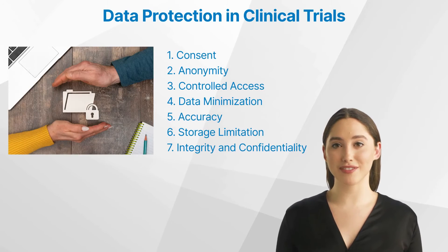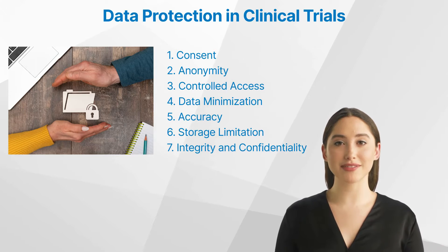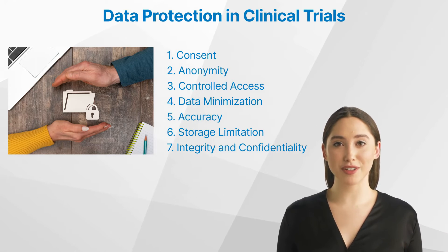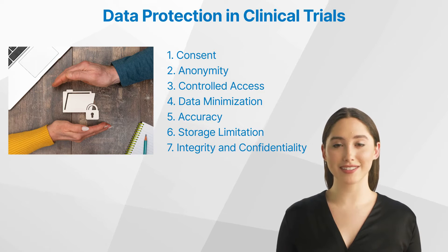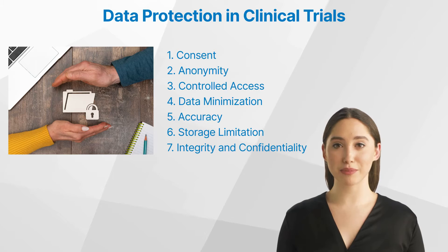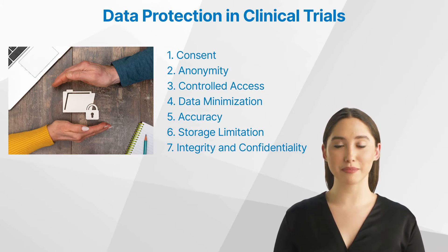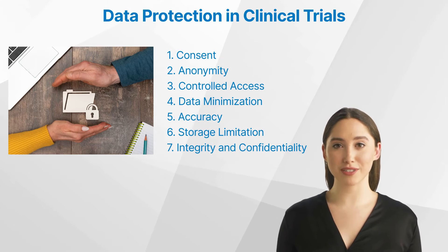Let us have a look at the principles of data protection in clinical trials. Data protection in clinical trials revolves around seven key principles. 1. Consent: participants must voluntarily agree to their data being collected and used. 2. Anonymity: data should be processed in a way that ensures participant identification is impossible. 3. Controlled access: only authorized personnel should have access to the data.